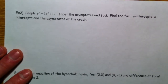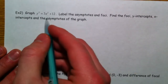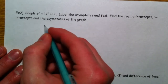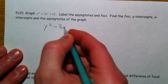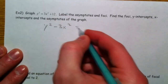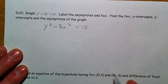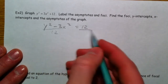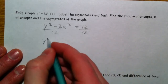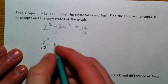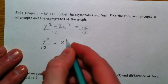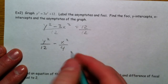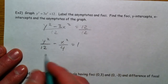y squared equals 3x squared plus 12. Let's get this into standard form. y squared minus 3x squared, if you move the 3x squared to the other side, set it equal to 12. Then divide by 12. So y squared divided by 12 minus x squared over 4 — since 3 divided by 12 is one fourth — and we set it equal to 1.